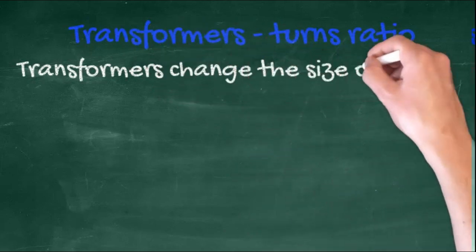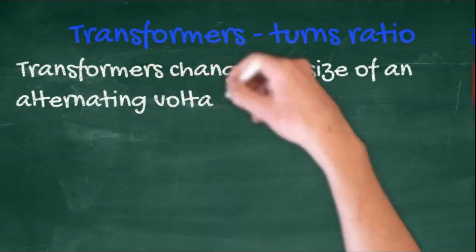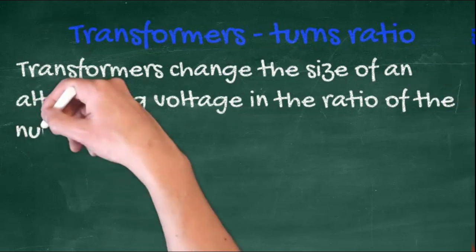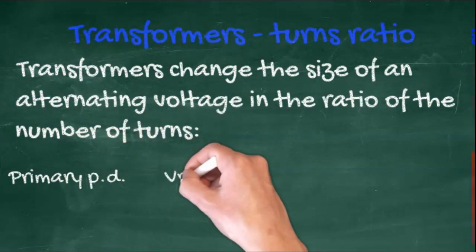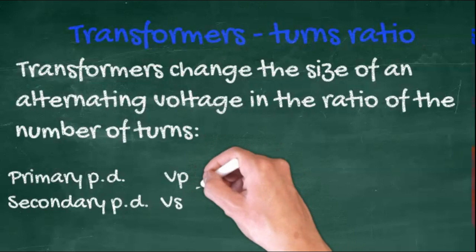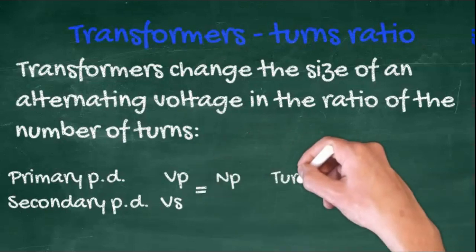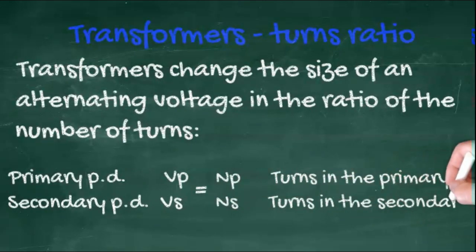Transformers change the size of an alternating voltage in the ratio of the number of turns. The primary voltage divided by the secondary voltage is equal to the number of turns in the primary divided by the number of turns in the secondary. You may well have to rearrange this and carry out calculations.